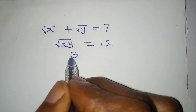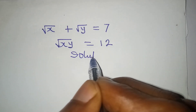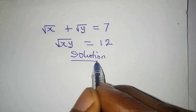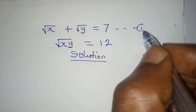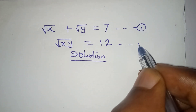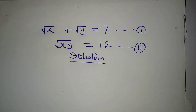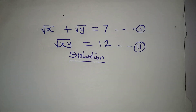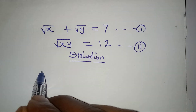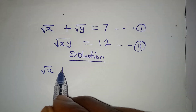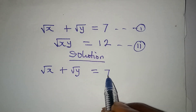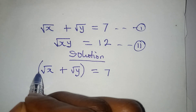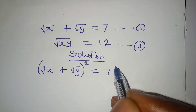Hello everyone, let's provide the solution to this problem. This is equation 1 and this is equation 2. From equation 1, where we have square root of x plus square root of y equal to 7, I want us to square both sides.